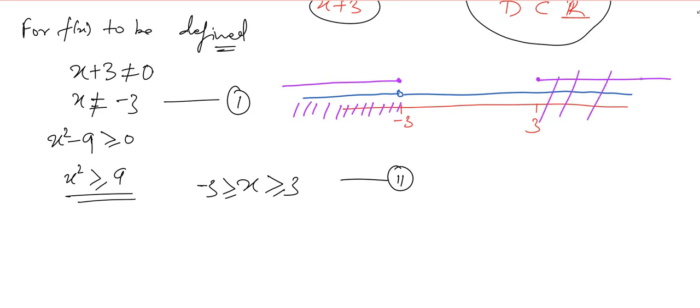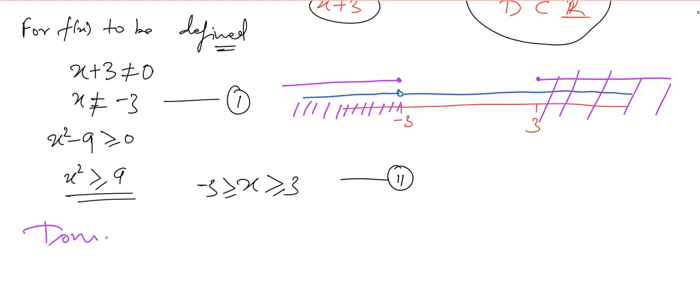The domain would be minus infinity to 3 open interval union, and then from 3 to infinity, and here the 3 is included.